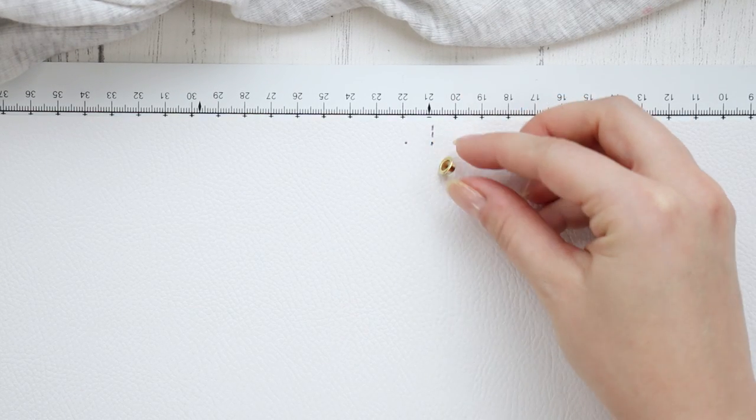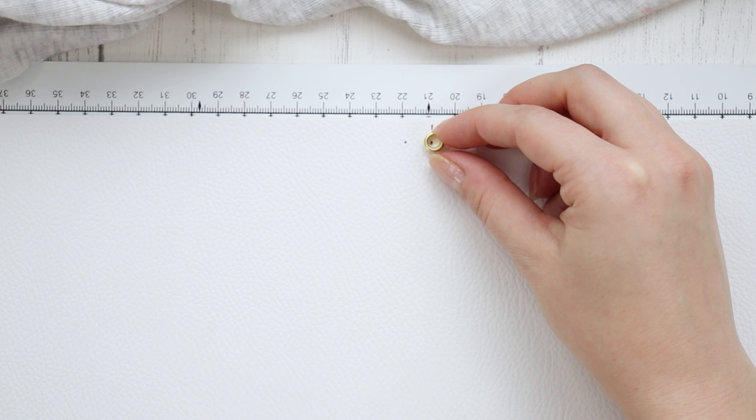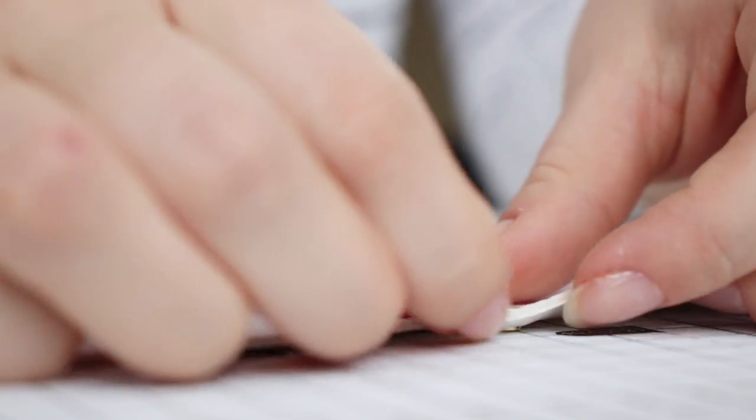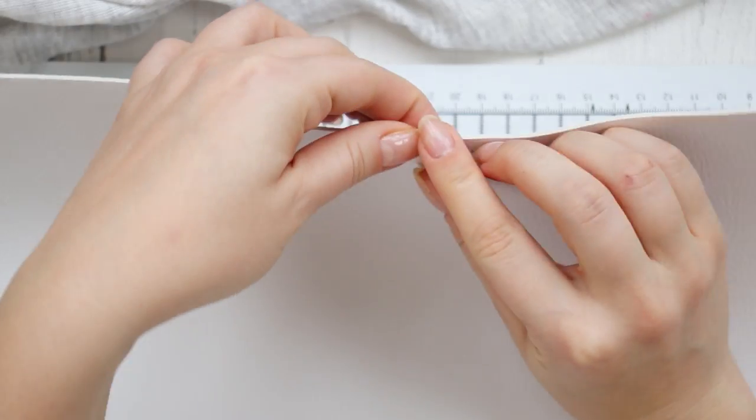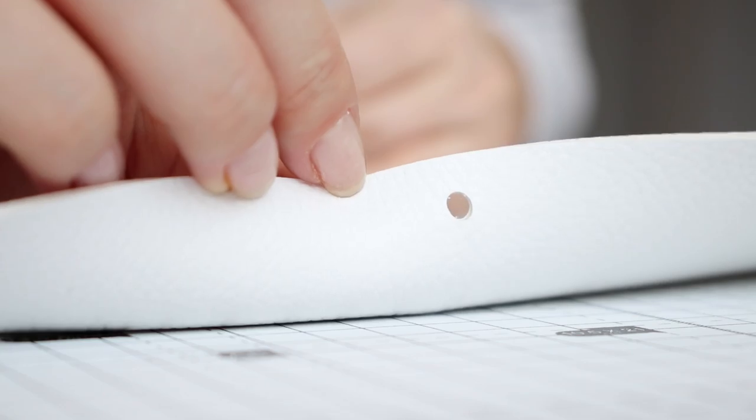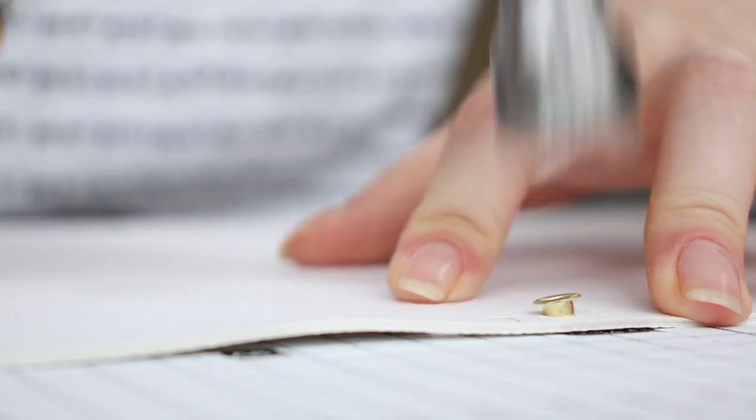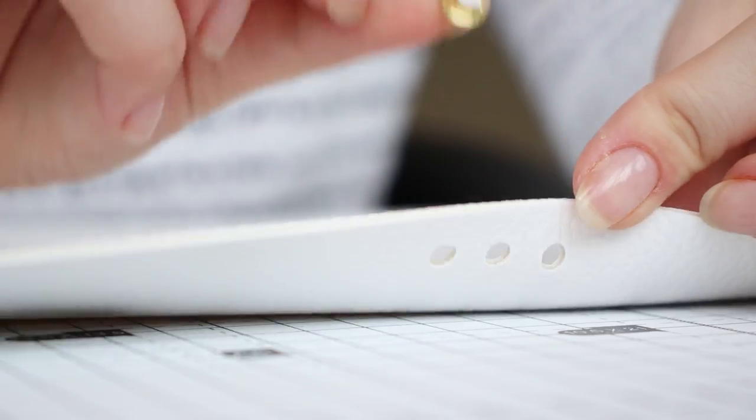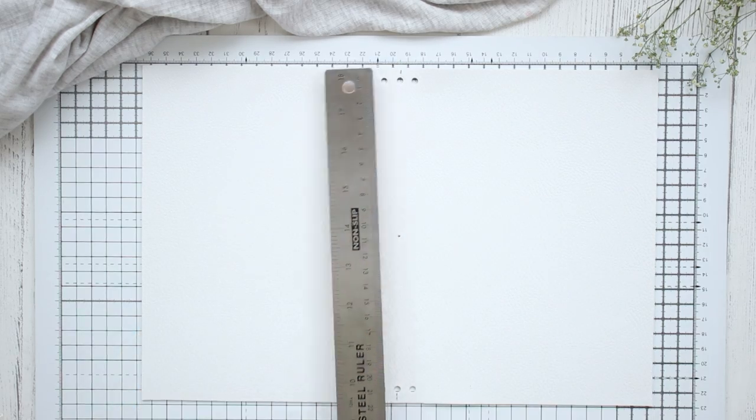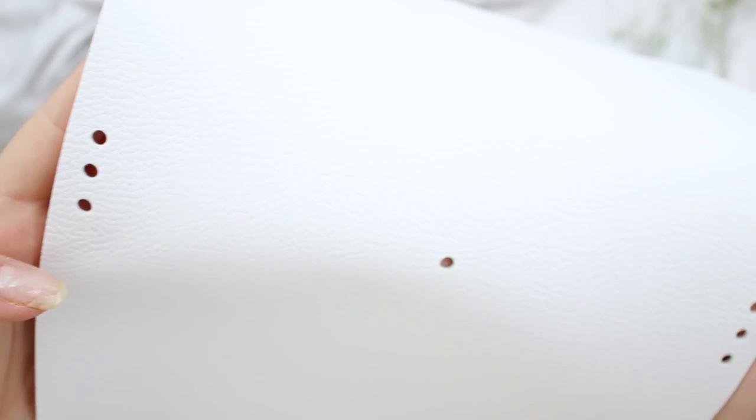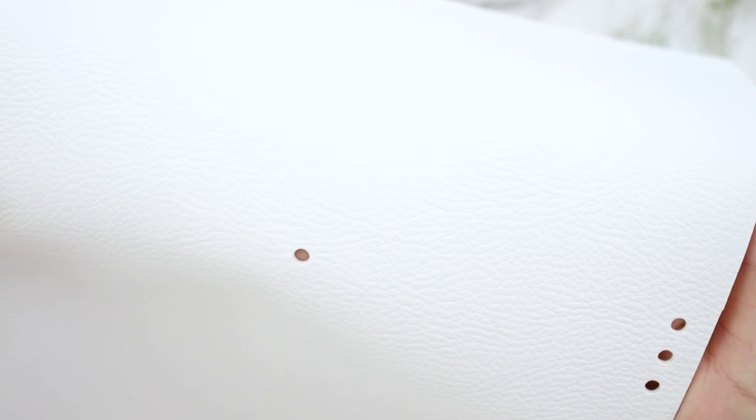So I didn't want to spend money on a fabric hole puncher just to use for this project, but I did find a way to make the holes without one. So what you want to do is place an eyelet in the center of the marking and then give it a few hits with the hammer. Take out the eyelet and you'll be left with the perfect hole. Then you're just going to repeat this process for the rest of the markings. Find the center of the cover and make a hole there as well and this is where the elastic closure will go through. When you're done, you should have three holes at the top and bottom and one in the center.